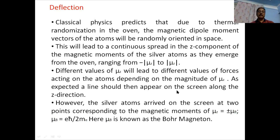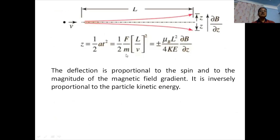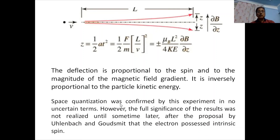As expected classically, a continuous line should appear on the screen along the z-direction. But, to the contrary, the silver atoms arrived at the screen at only two points, corresponding to magnetic moment μz = ±μB, where μB is the Bohr magneton. The deflection z is proportional to the spin and to the magnitude of the magnetic field gradient δB/δz, and inversely proportional to the kinetic energy. Thus, space quantization was confirmed by this experiment in no uncertain terms; however, the full significance of the result was not realized until after the proposal by Uhlenbeck and Goudsmit that electrons possessed intrinsic spin.